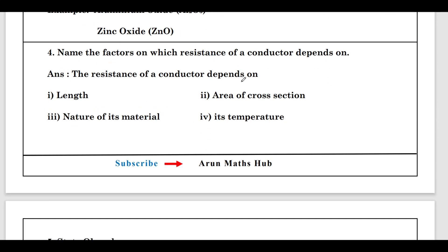Fourth question: Name the factors on which the resistance of a conductor depends. The resistance of a conductor depends on the length of the conductor, the area of cross-section, the nature of its material, and its temperature.